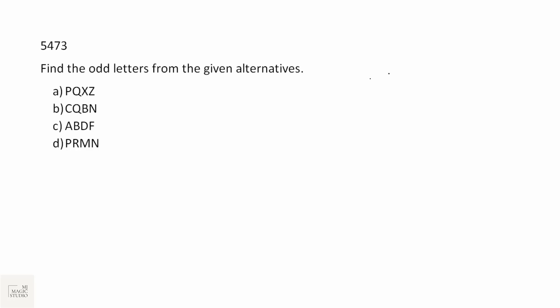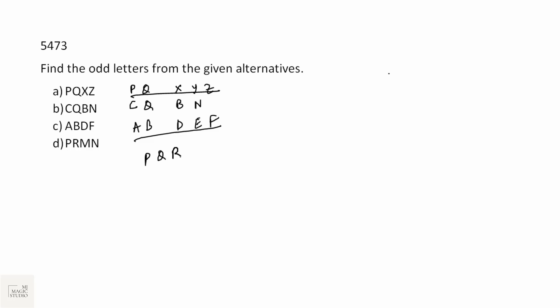Again a classification — four letter groups are given and we need to find the odd one out. We have X-Y-Z, P-Q, X-Y-Z, A-B-D, D-E-F — these are matching consecutive sequences. Then P-Q-R, M-N, then P-Q-R with A-B and D-E-F. But C-Q-B-N has no such combination pattern. Option B is the odd one out.